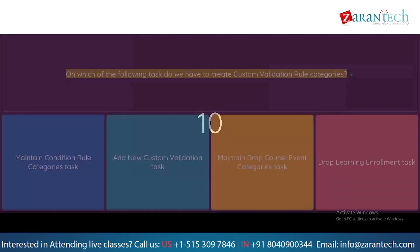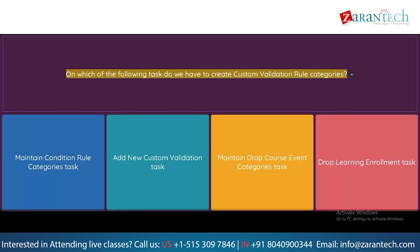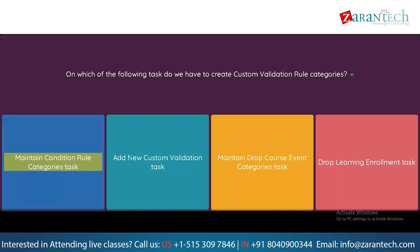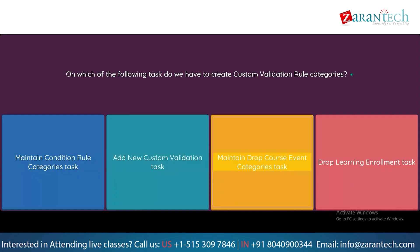Question: On which of the following tasks do we have to create custom validation rule categories? Option 1: Maintain Condition Rule Categories task. Option 2: Add New Custom Validation task. Option 3: Maintain Drop Course Event Categories task. Option 4: Drop Learning Enrollment task.